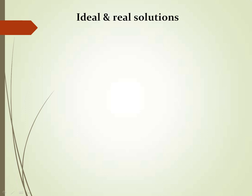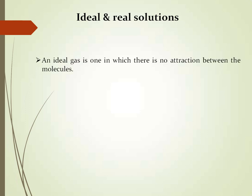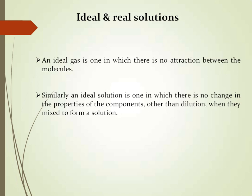First of all we should know ideal and real solutions. An ideal gas is one in which there is no attraction between molecules. Similarly, the ideal solution is one in which there is no change in a property of a component other than dilution when they mix to form a solution. If you have 10 ml of solution A and 10 ml of solution B, when you mix both you get 20 ml of uniform solution — that is ideal. If the volume changes, then it is a real solution.